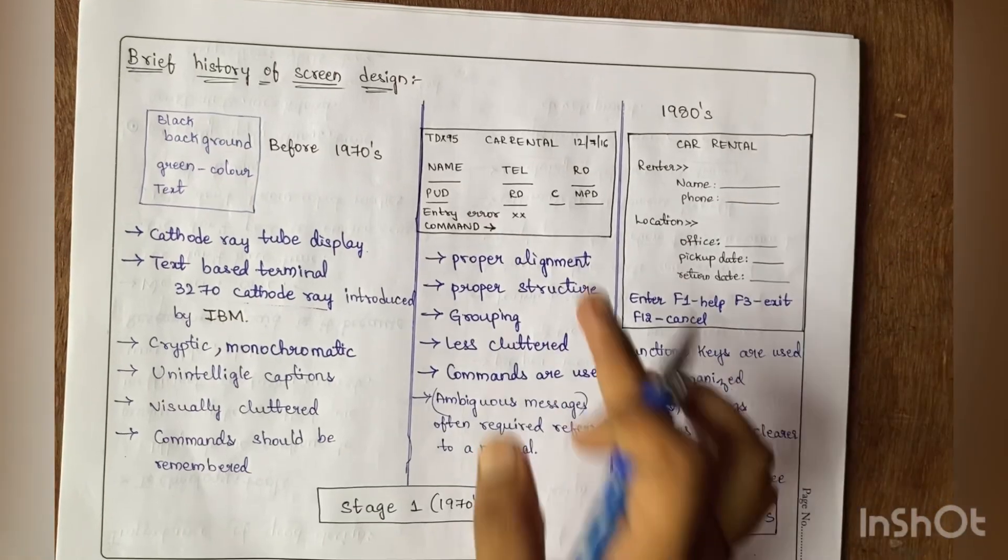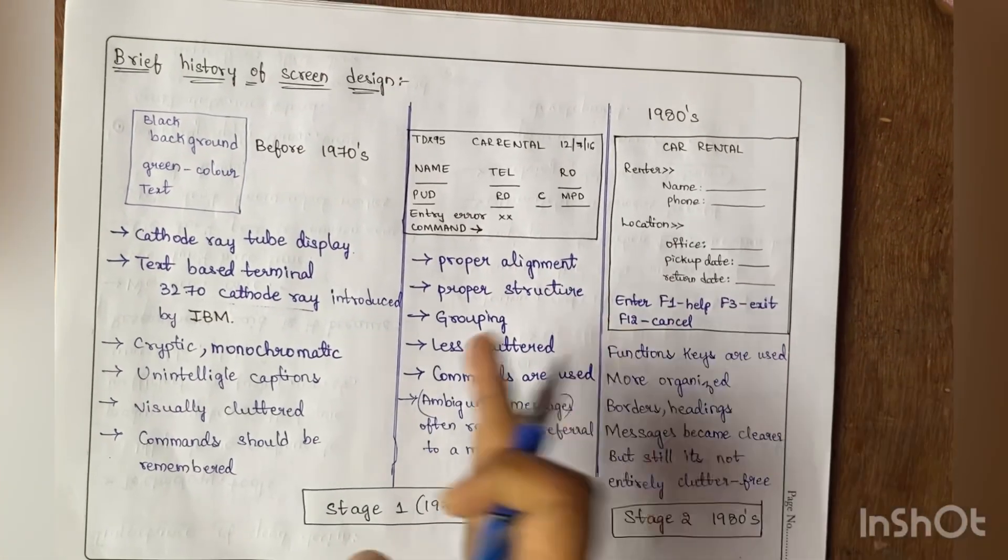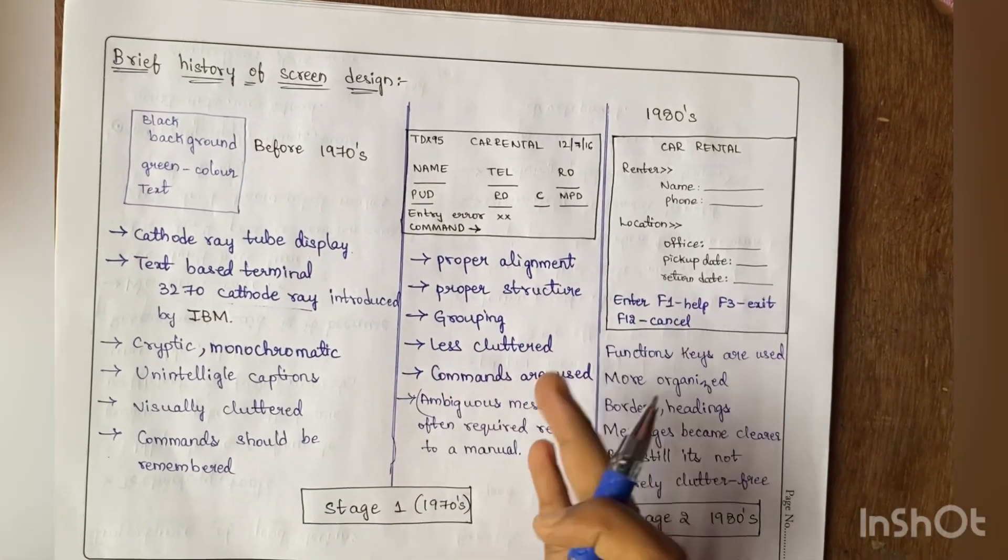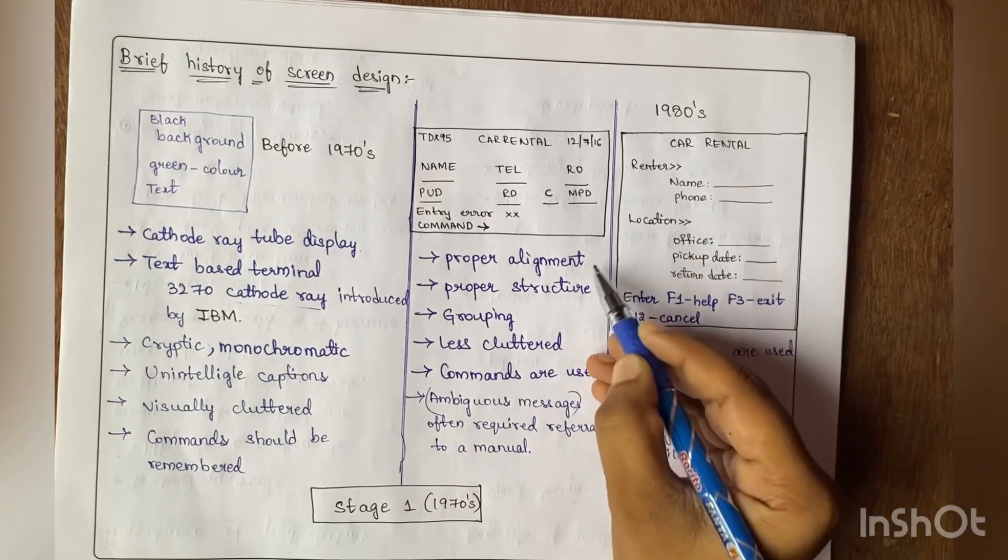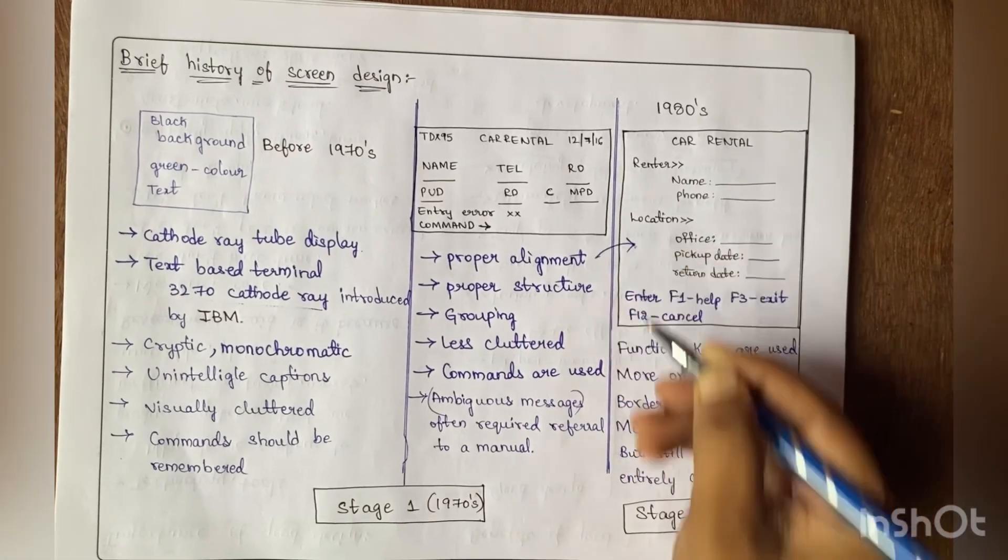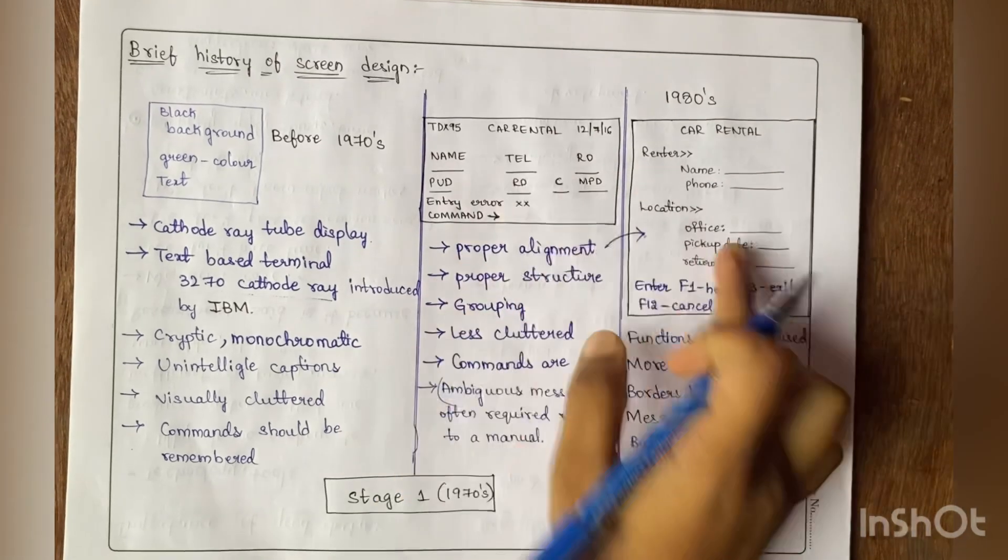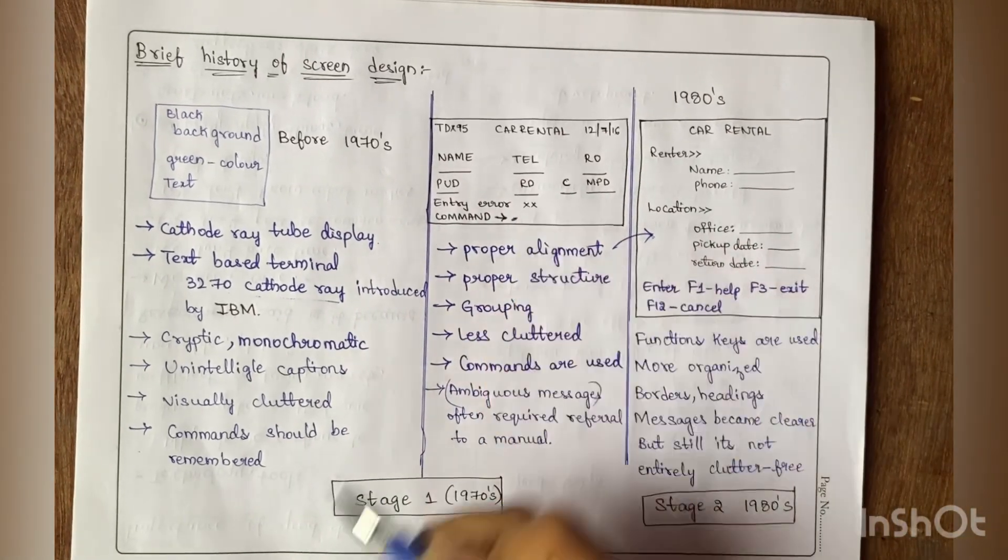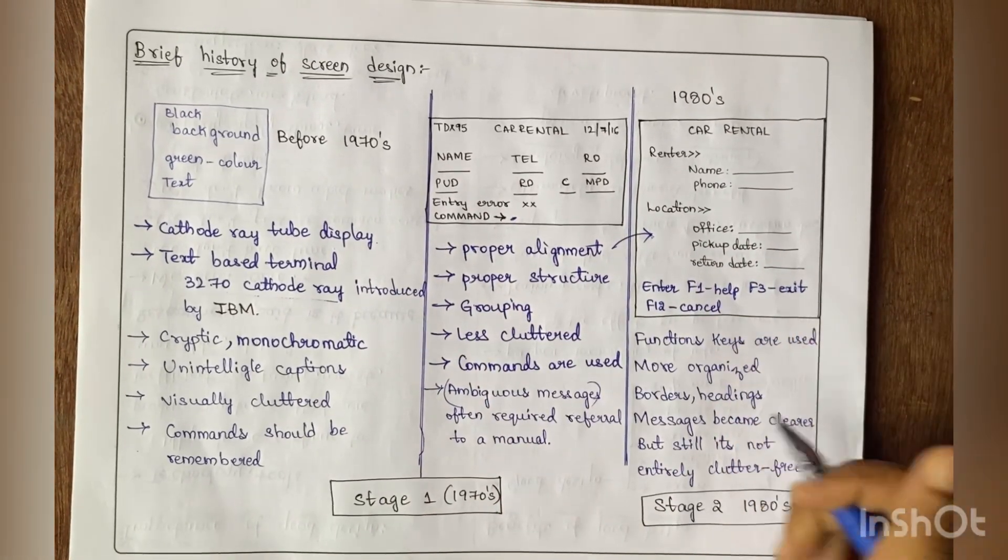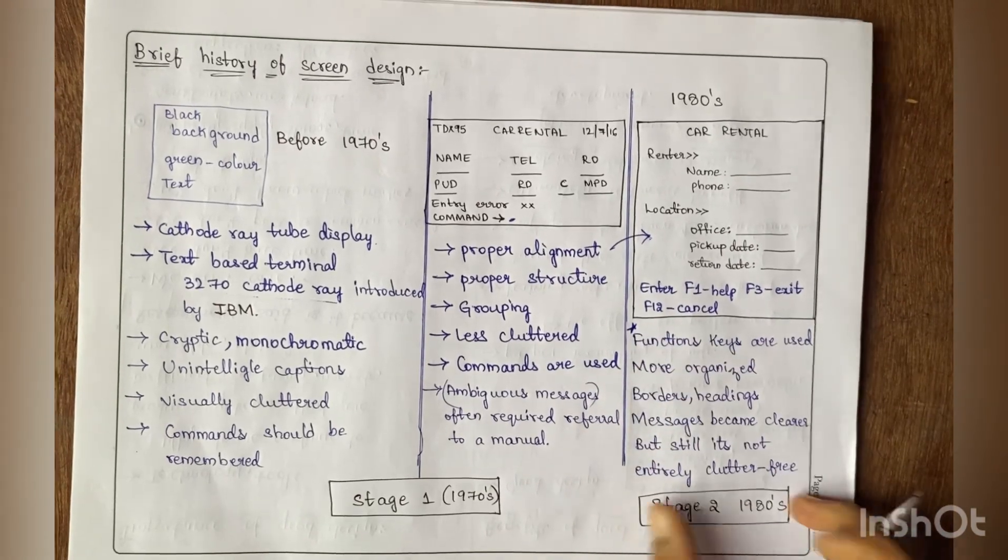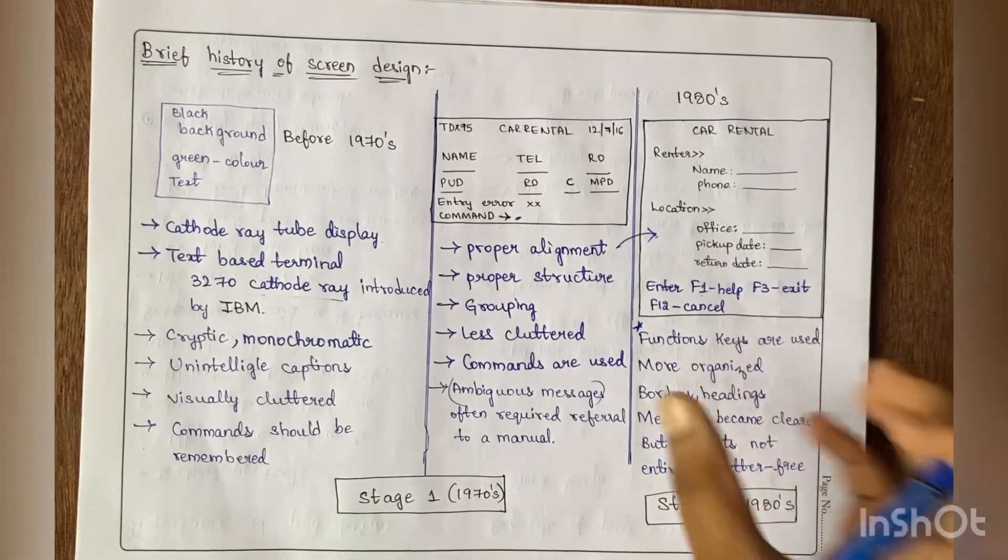was completely altered. They overcame the drawbacks of 1970s screen design—they gave proper alignment, as you can see, and proper structure. This is somewhat better compared to the previous one. Here we also need to enter commands, but they have given function keys, which is the highlight of Stage 2.